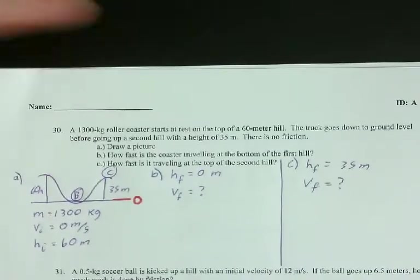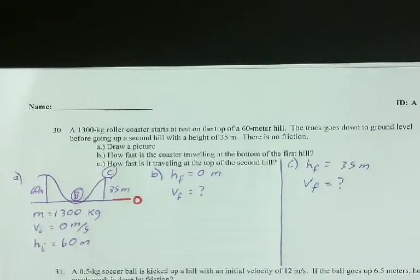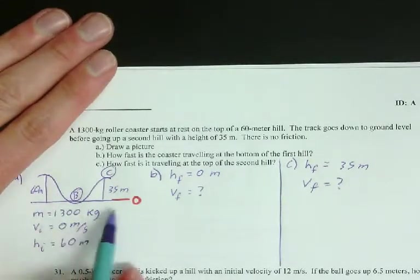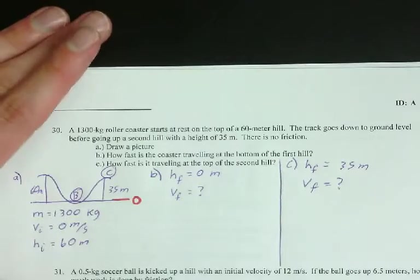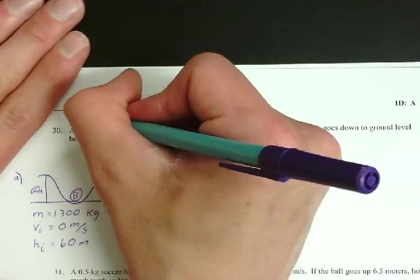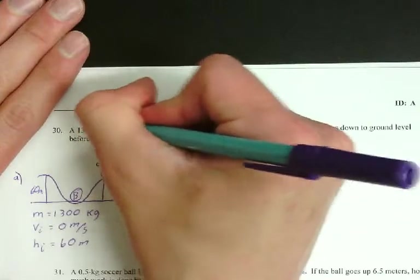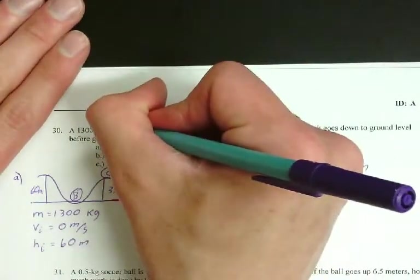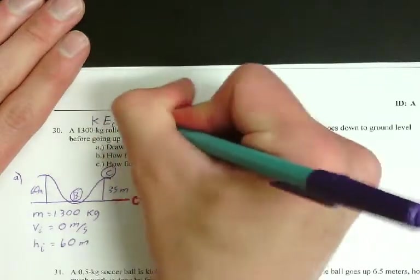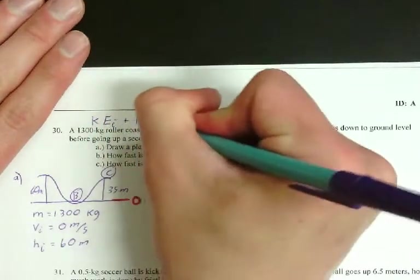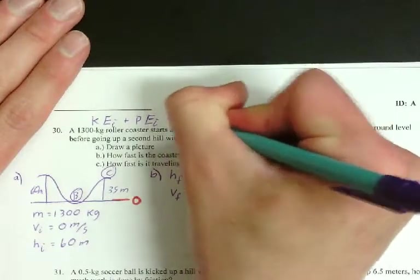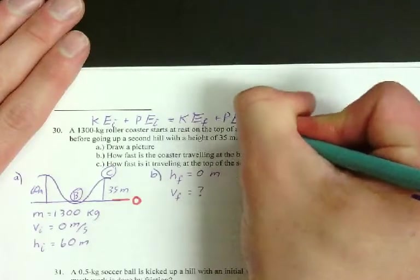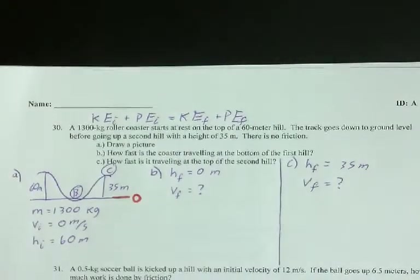Hint number one is this is talking about energy changing. It's talking about starting at a point, ending at another point, moving between those points. That's what energy is. And so the energy conservation equation is KE_i plus PE_i equals KE_f plus PE_f. So that's the equation. That's how you're going to solve this.